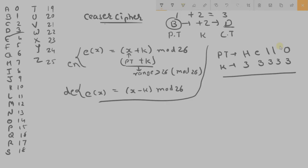So H plus 3, first we will check what is the value of H. So H is 7, 7 plus 3, 1, 2, 3, 10. 10 is K. So we will get K, we will replace H by K.